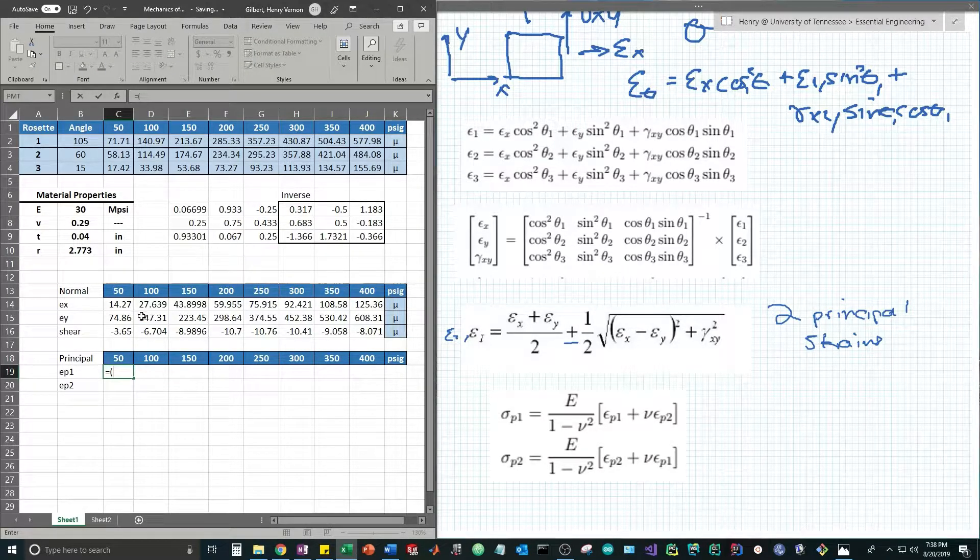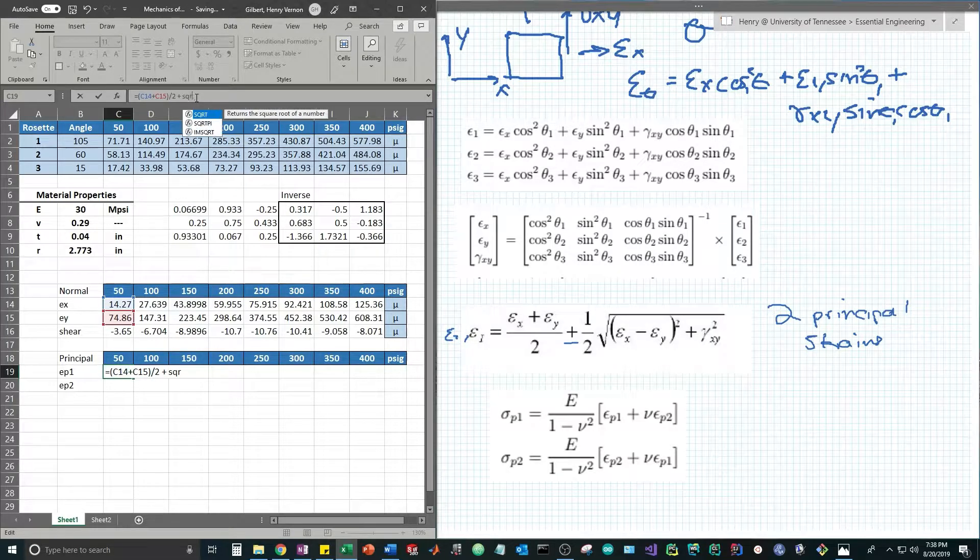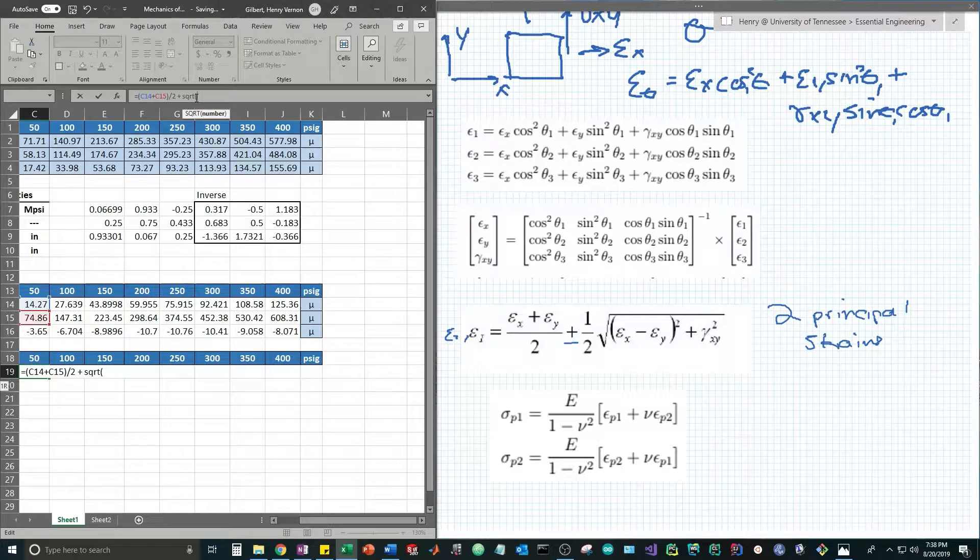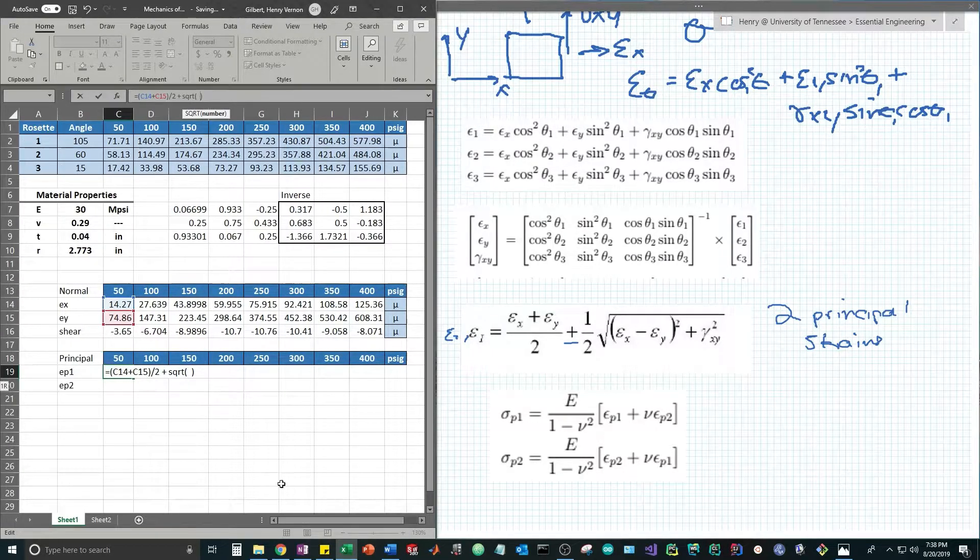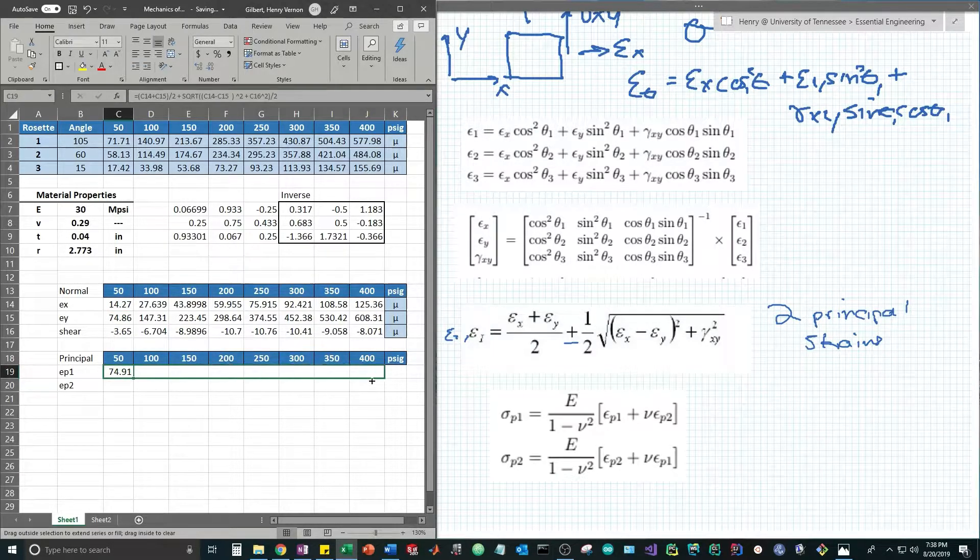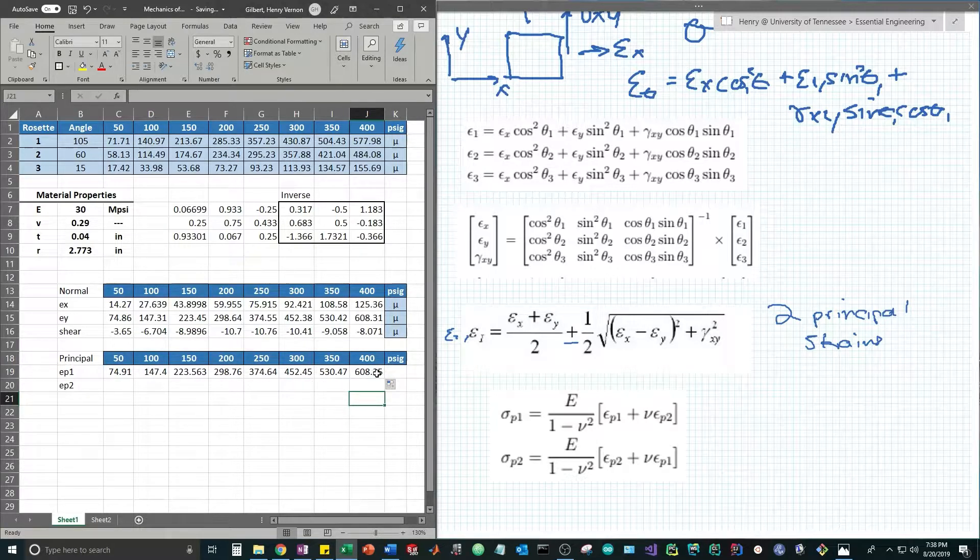This is equal to epsilon x plus epsilon y divided by 2 plus square root of epsilon x minus epsilon y quantity squared plus the shear strain squared. Let's not forget to divide that radical sign by 2. We hit enter and that gives us our first principal strain. We simply drag that across and Excel automatically calculates the principal strain at each pressure stage.